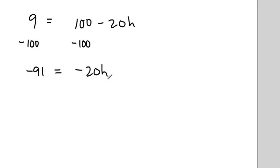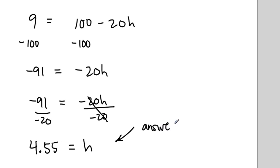Finally, to get the h by itself, I'll take both sides, divide by negative 20. That isolates the h. Now we need to divide. Negative 91 divided by negative 20, that's 4.55, positive, of course, because the two negatives cancel. And that's the value of h. So that's the answer. The height is 4.55 feet.